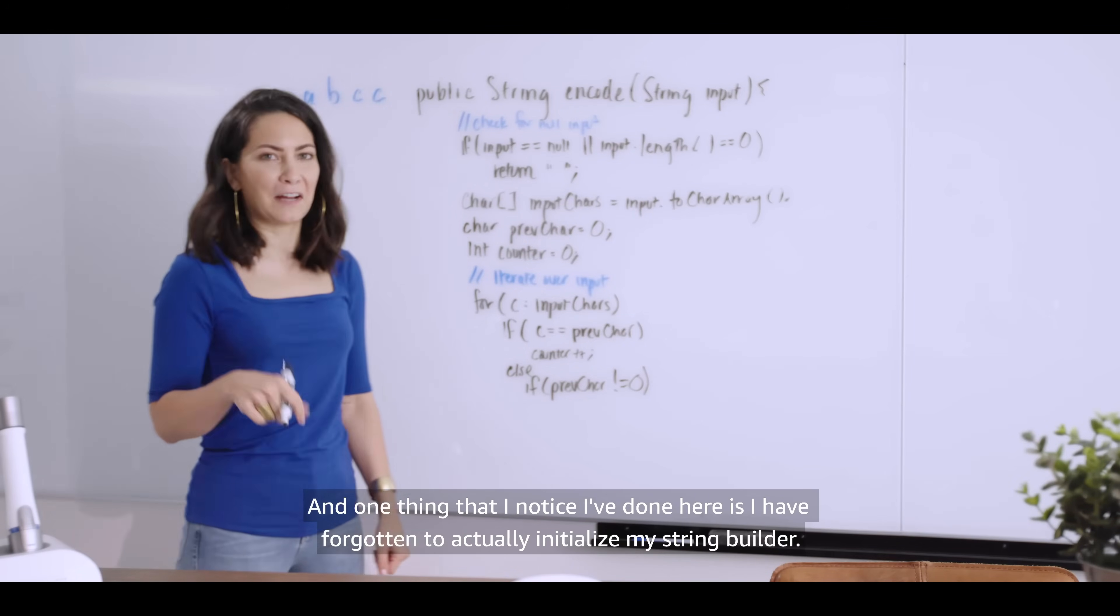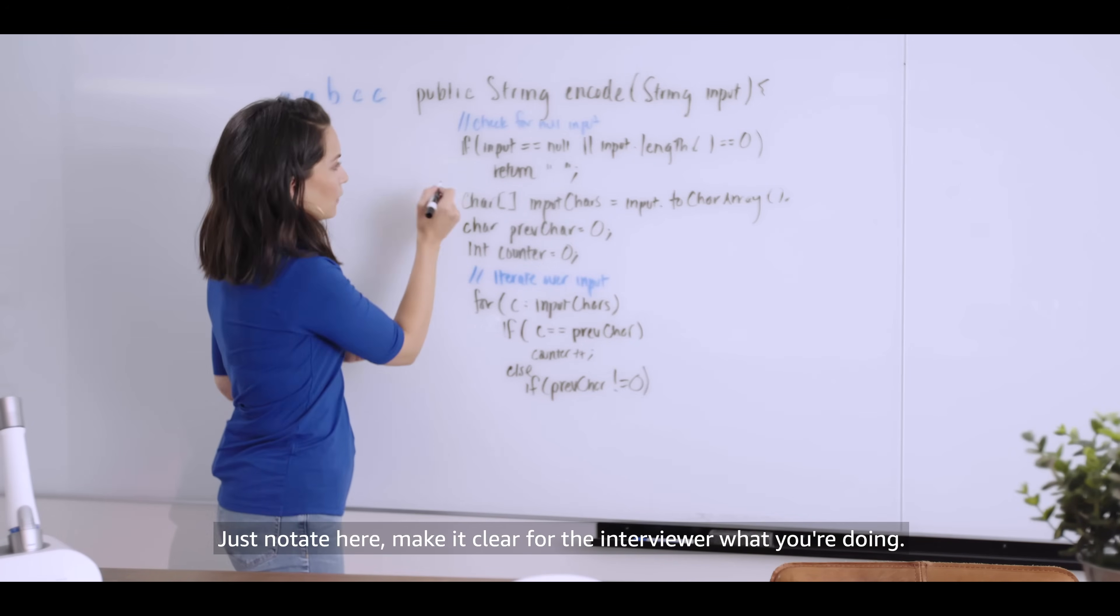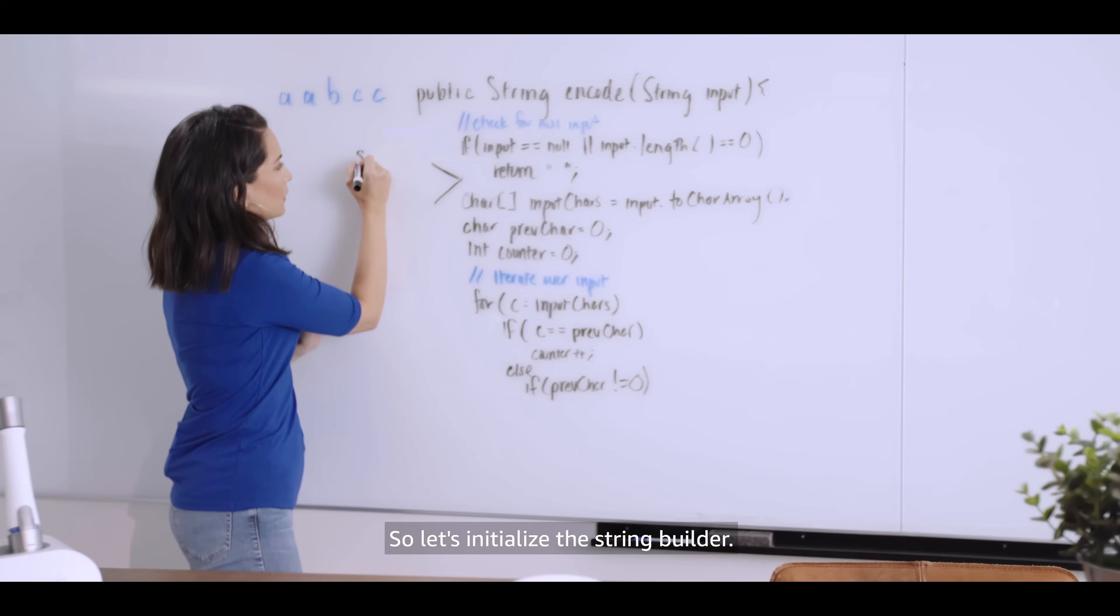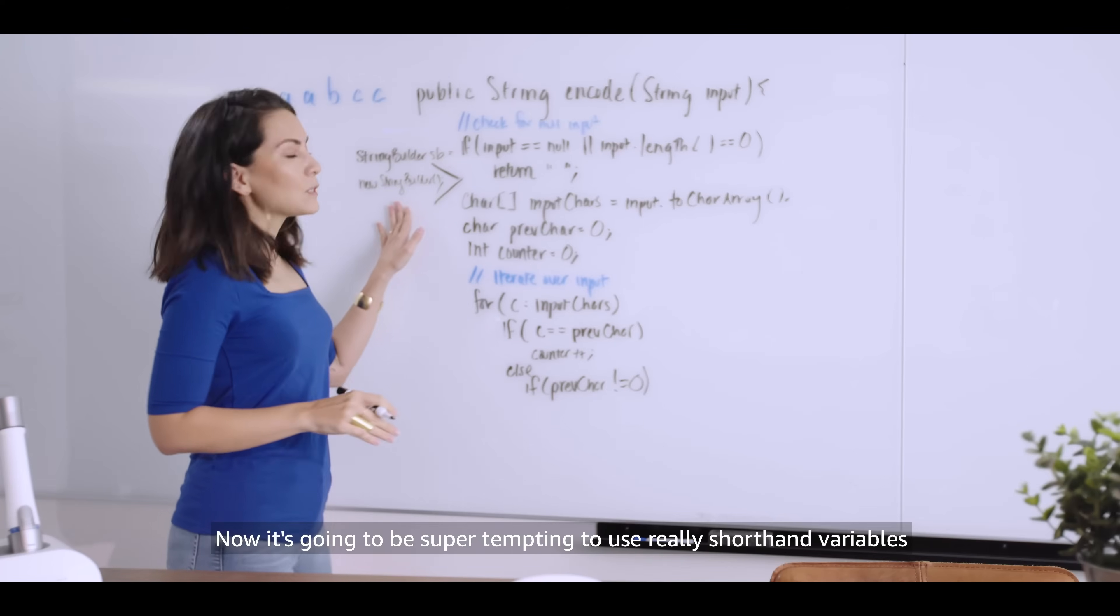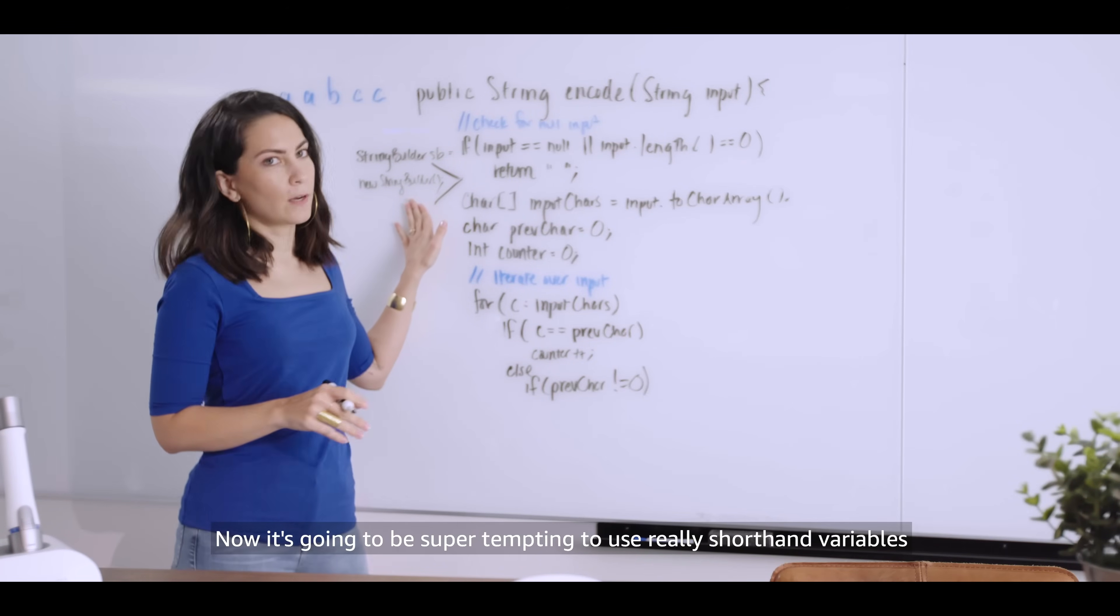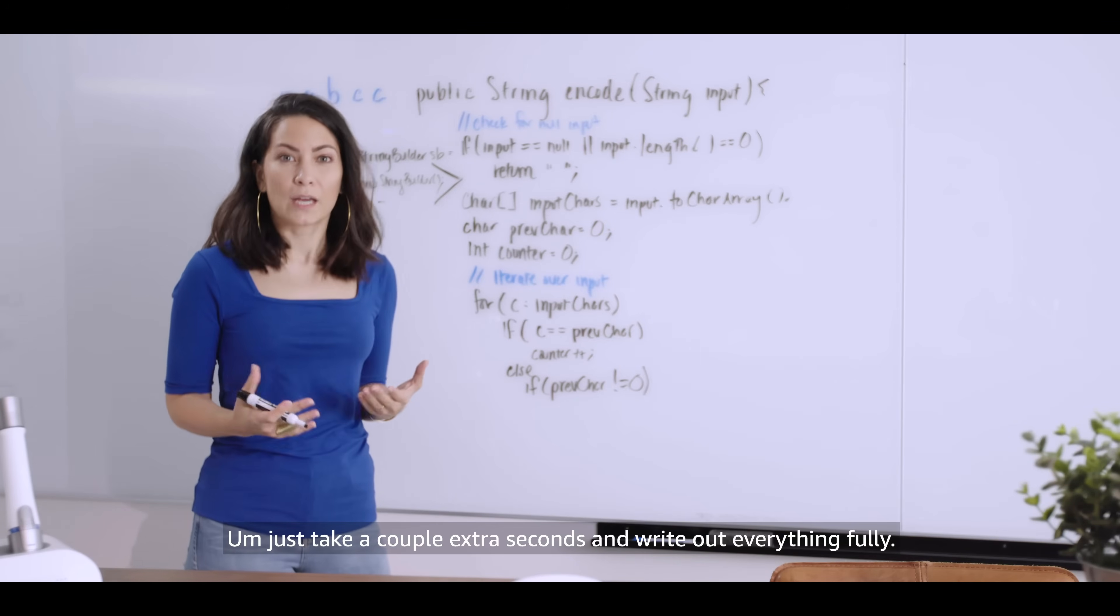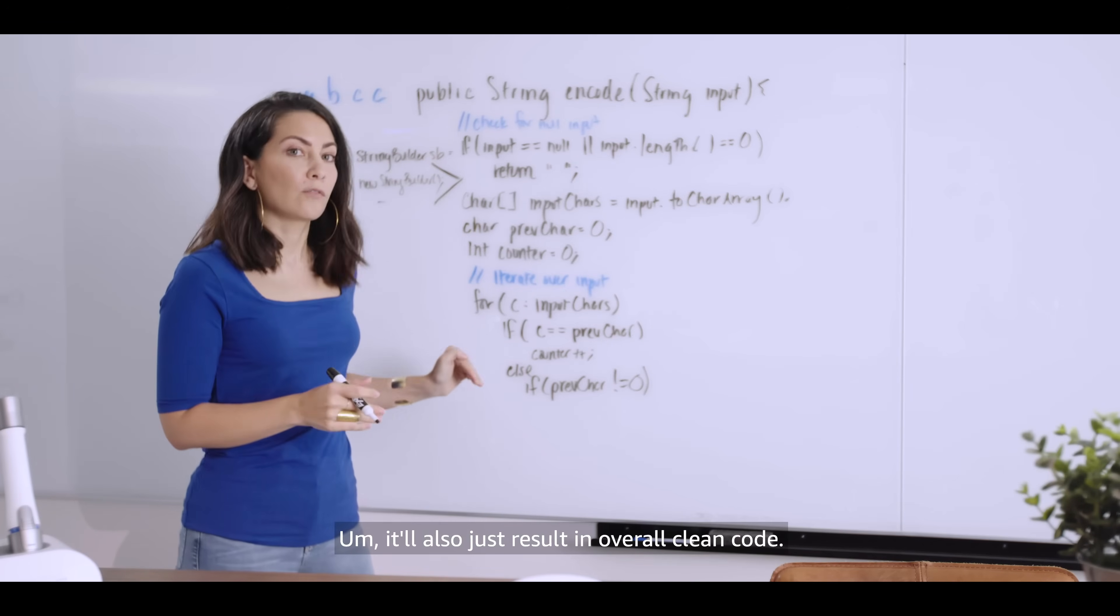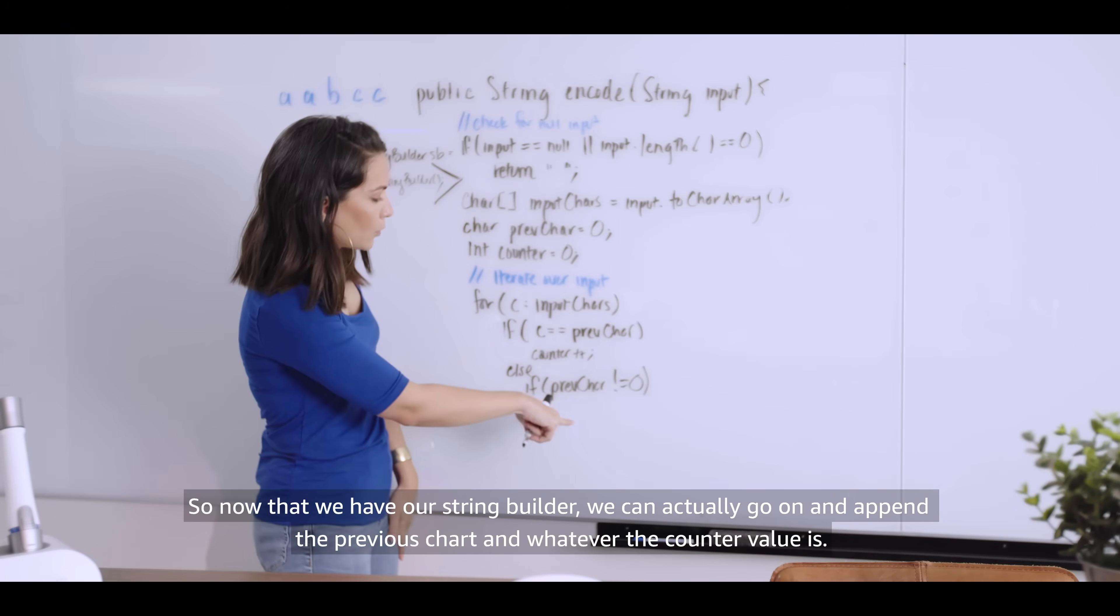And one thing I notice I've done here is I have forgotten to actually initialize my string builder. And that's okay. Like if you don't get everything the first time, that's fine. Just notate here, make it clear for the interviewer what you're doing. And so I'm just going to say, all right, I forgot this line. I don't want to erase everything. So let's initialize a string builder. Now it's going to be super tempting to use really shorthand variables or to just say, okay, we know we're initializing a new string builder, but I'm going to really recommend that you don't do this. Just take a couple extra seconds and write out everything fully. It'll be clear for you. It'll be clear for the interviewer. It'll also just result in overall clean code. It's a good habit to get in the practice of.